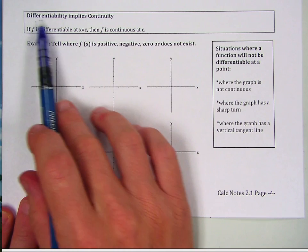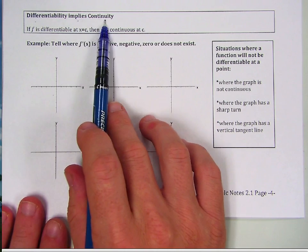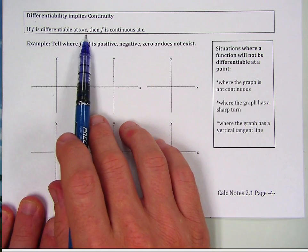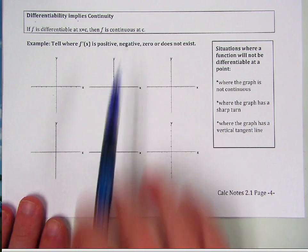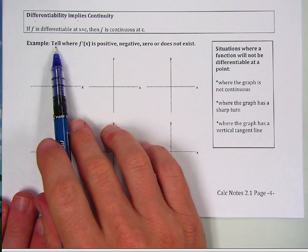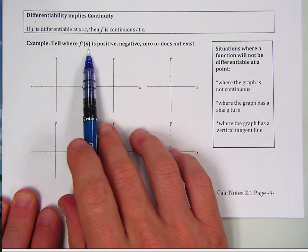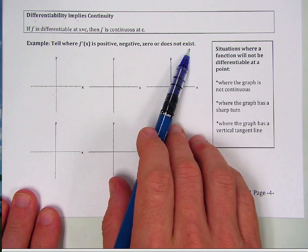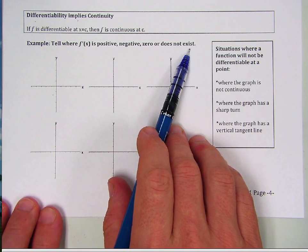One important result: differentiability implies continuity. If f is differentiable at x = c, then f is continuous at c. So if you can find the derivative at c, you also know that it's continuous at c. Now let's think about where f′(x) is positive, negative, zero, or where the derivative does not exist.